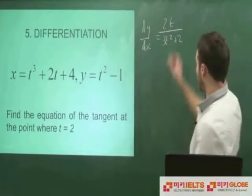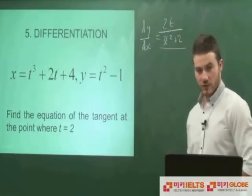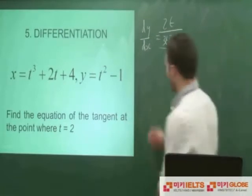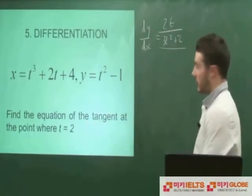And actually, we can leave it in this form. So that's our derivative. Now, we want to find the gradient of the tangent at this point. So we're going to substitute t equals 2 into our derivative.